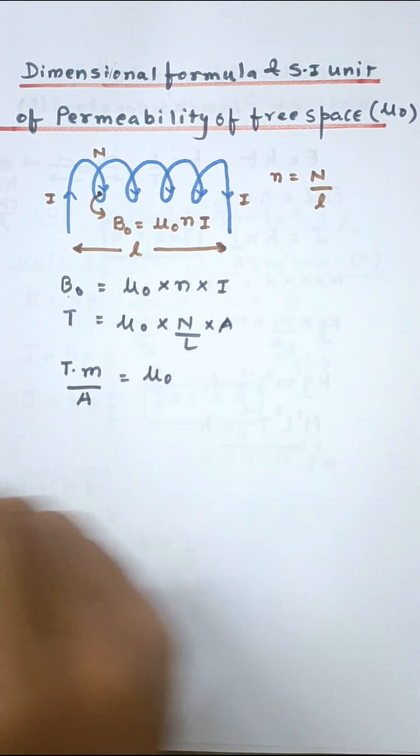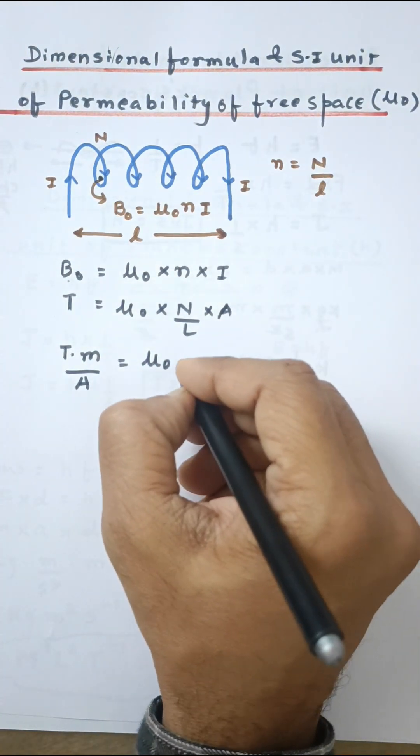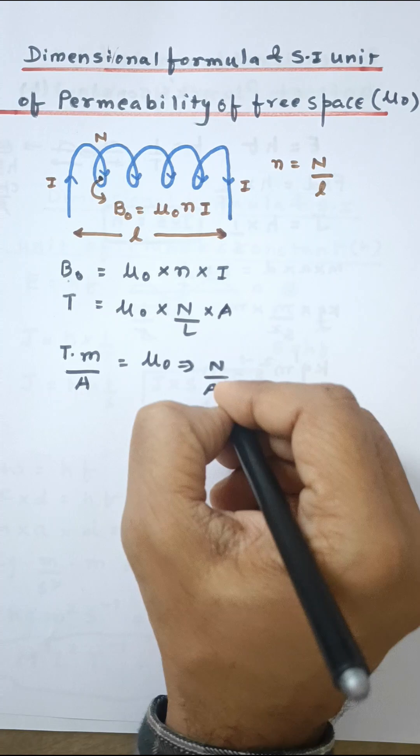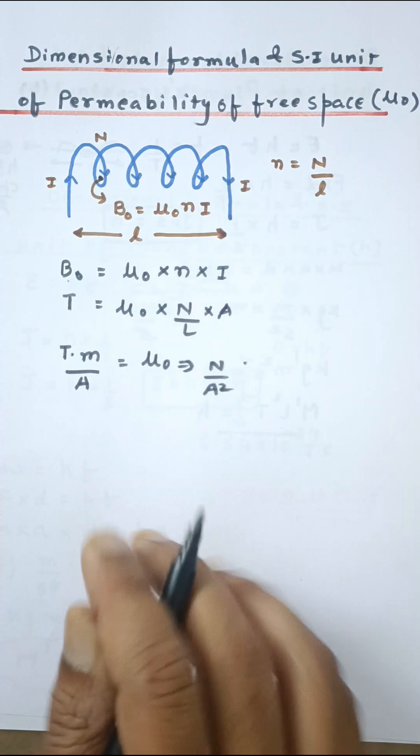Because n is the number of turns, it does not have any unit. It can be further found out that Newton upon ampere square is also the unit of μ0, and you can use Biot-Savart law for finding out, but it's one and the same.